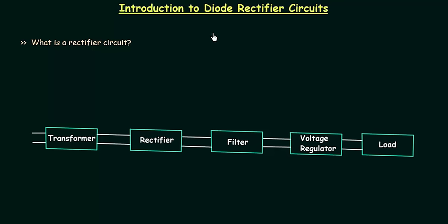In the last lectures we completed series and parallel configurations of PN junction diode. Another important application of semiconductor diode is rectifier circuits.